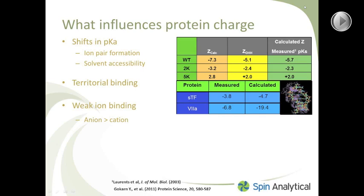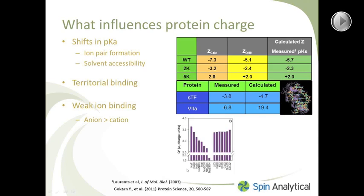Finally there is weak anion binding. This is something that our predecessors in protein chemistry — people like Scatchard and Tanford — were very interested in: monovalent anion binding by proteins. Data from Dr. Gokharn's group at Genentech show that anions bind to a protein. At a constant salt concentration, the charge changes dramatically as you go from fluoride over to sulfate, and in fact these fall right on the Hofmeister series in terms of the amount of charge neutralization that occurs. You don't see as great an effect with cations as you do with anions.